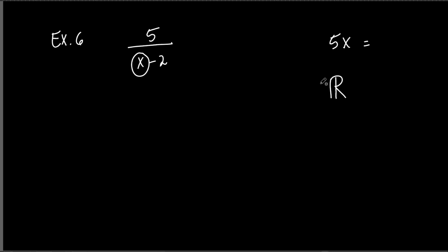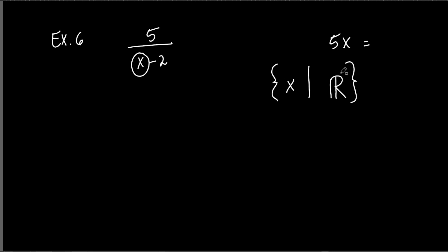So we would say X can be all the real numbers. We write it in a bracket: X such that X is in the set of real numbers. That little bar means 'such that.' So when they ask for the domain of an algebraic expression, they mean: what can X equal? X can be all the real numbers — that's how we write it.